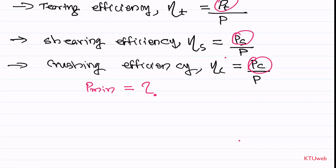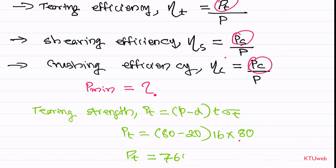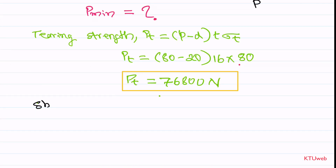First, the tearing strength: p_t = (p − d) × t × σ_t. Substituting the values: p_t = (80 − 20) × 16 × 80 = 60 × 16 × 80 = 76,800 N.